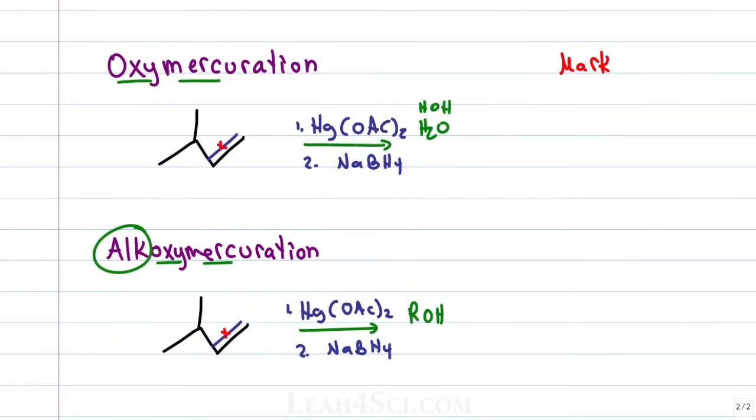We break the pi bond, put a hydrogen on the less substituted carbon. In oxymercuration we add an OH on the more substituted carbon. In alkoxymercuration we add an OR. If that ROH is methanol you add a OCH3. If it's ethanol you add an OEt and so on.